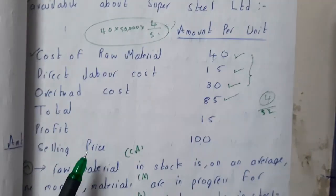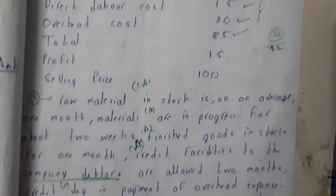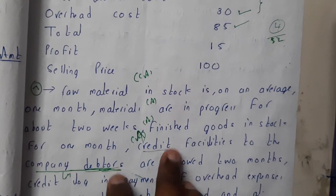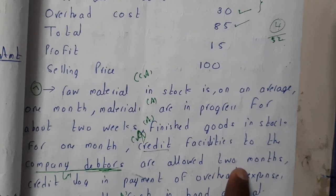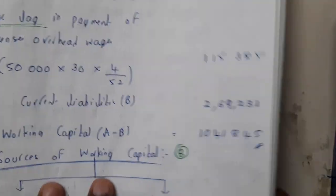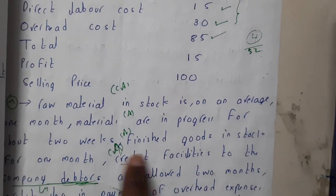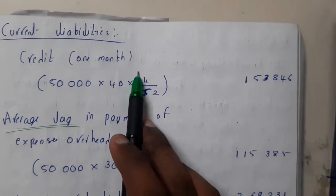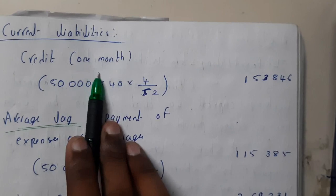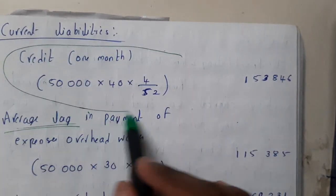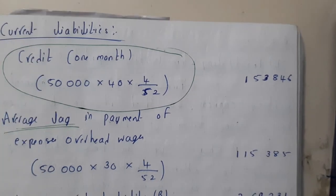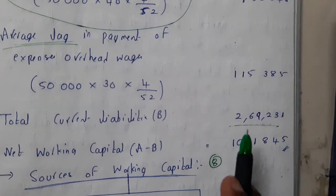There is also a credit facility on raw materials — credit means we need to repay, so this becomes a liability. For two months: 40 rupees into 50,000 into 8 by 52. Note: this additional credit item was added for illustration purposes. After totaling both liabilities, we get 2,69,000 rupees as total current liabilities.